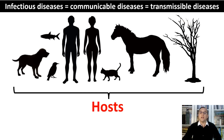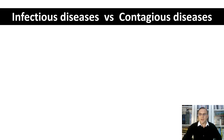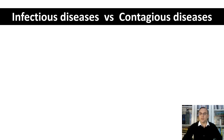Humans, animals and even plants can all be hosts for various parasites including pathogenic bacteria, viruses, yeast, protists, and even worms and insects. All contagious diseases are infectious diseases, but not all infectious diseases are contagious. This is because some but not all infectious diseases spread directly from one person to another.